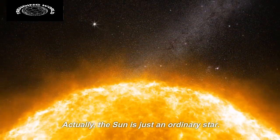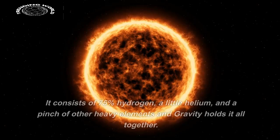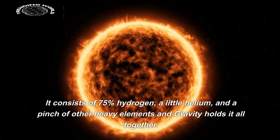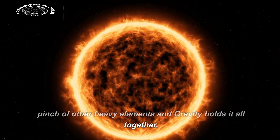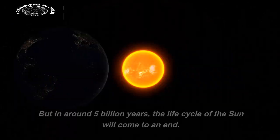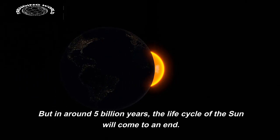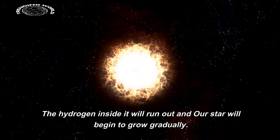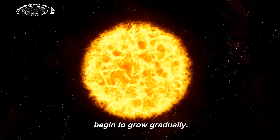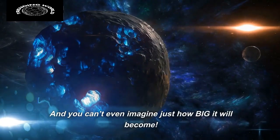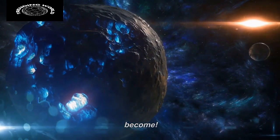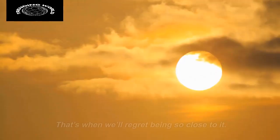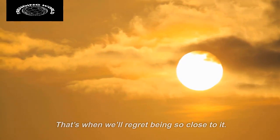Actually, the sun is just an ordinary star. It consists of 75% hydrogen, a little helium, and a pinch of other heavy elements. Gravity holds it all together. But in around 5 billion years, the life cycle of the sun will come to an end. The hydrogen inside will run out and our star will begin to grow gradually. It will start eating all the nearby planets. That's when we'll regret being so close to it.